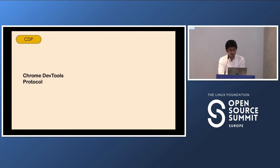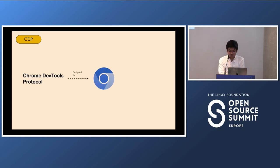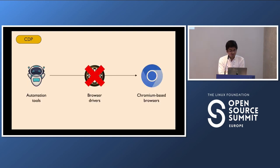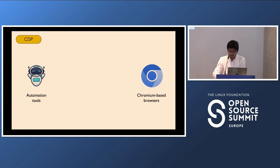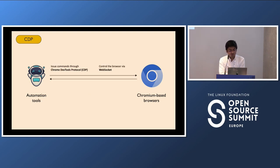Our next protocol is the Chrome DevTools Protocol. CDP, as the name suggests, is designed especially for Chromium-based browsers, and tools like Puppeteer have used it for browser automation testing. In CDP, the automation tools do not need drivers to communicate with the browsers — they communicate directly. Commands are issued through CDP and the connection is made via WebSocket. The key focus point here is WebSocket — earlier in WebDriver Classic we communicated through HTTP requests.